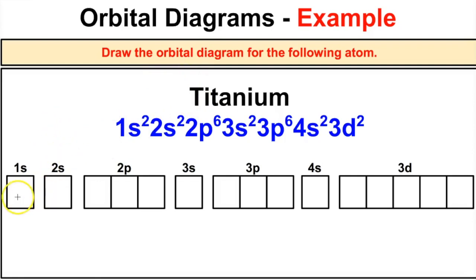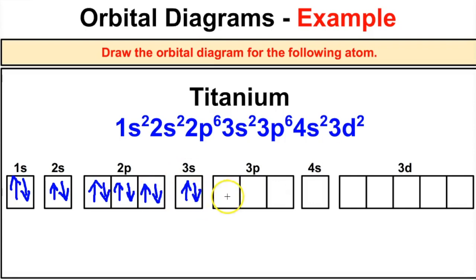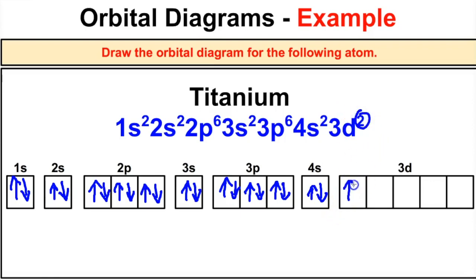Here is the electron configuration for titanium, and now we want to draw the orbital diagram. There are two electrons in the 1s, one spinning each way; same for the 2s. There are six electrons in the 2p — paying attention to Hund's Rule, we fill each orbital with one electron before adding a second. The 3s has two, the 3p has six, the 4s has two electrons, and last, the 3d has two electrons — one in each of two separate orbitals — giving titanium two unpaired electrons.